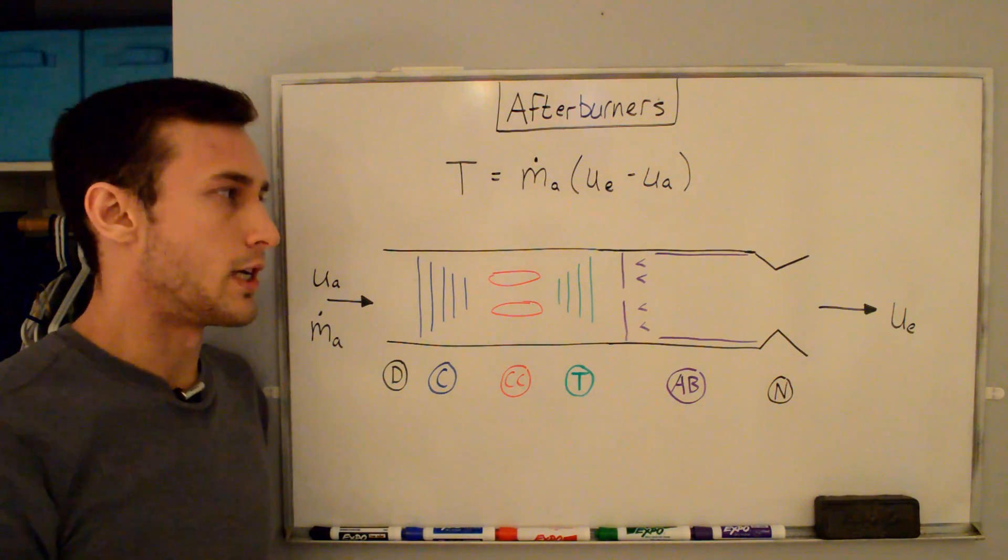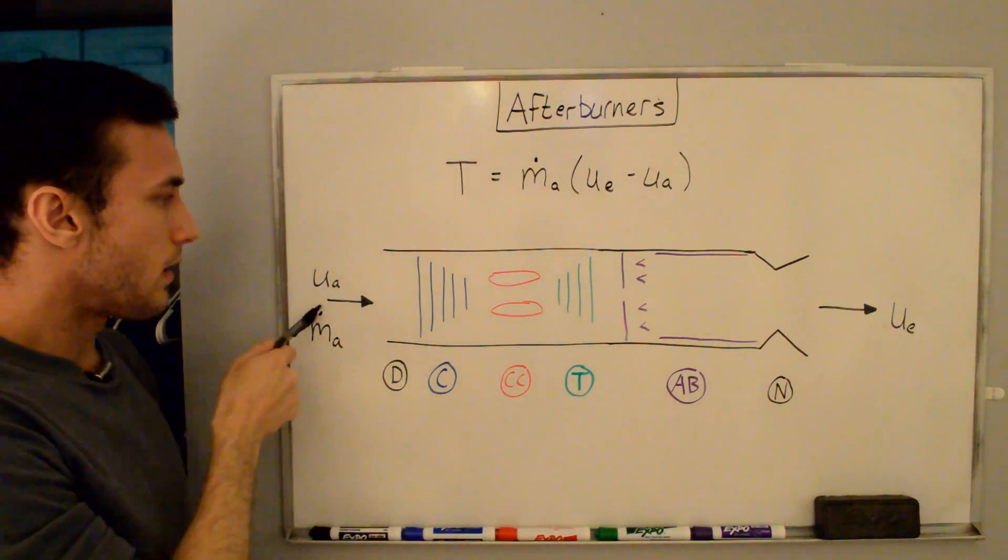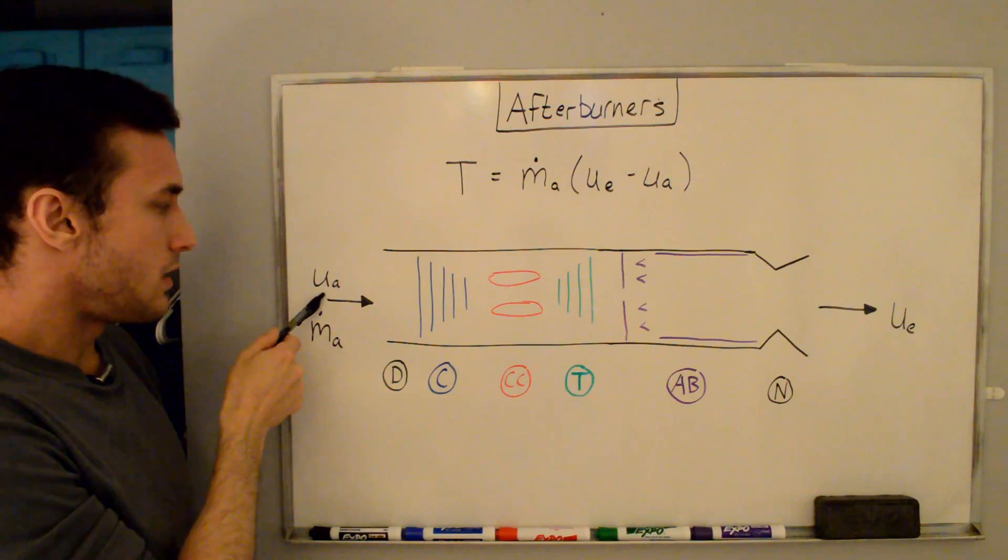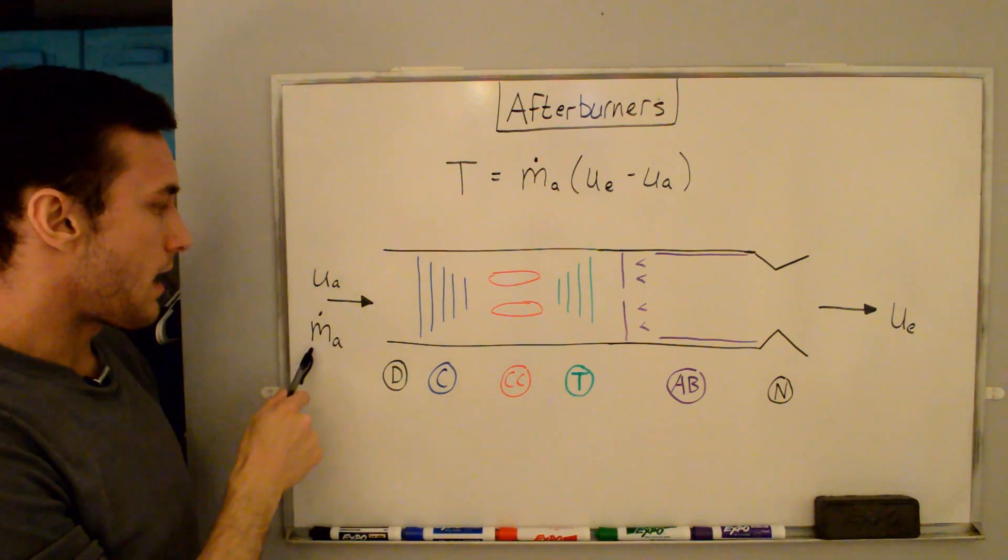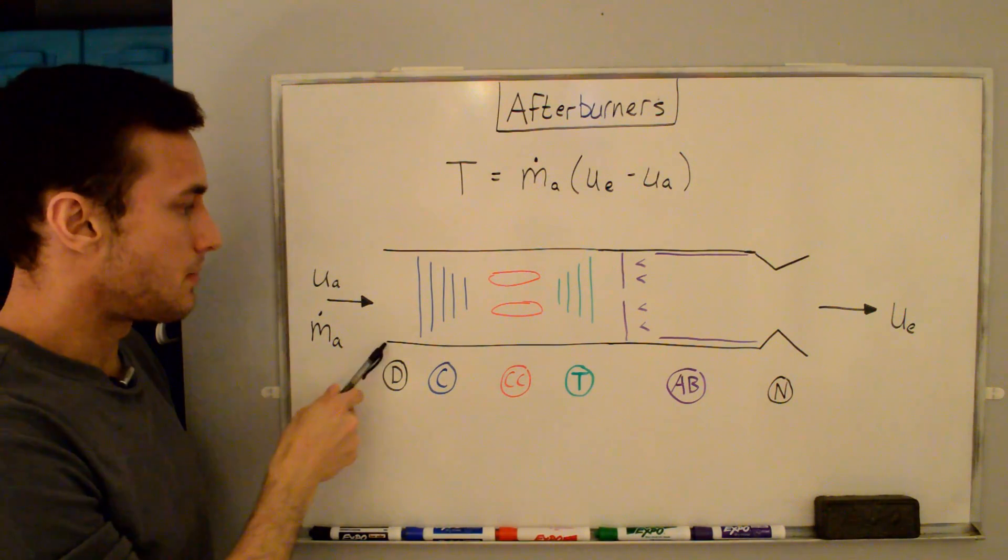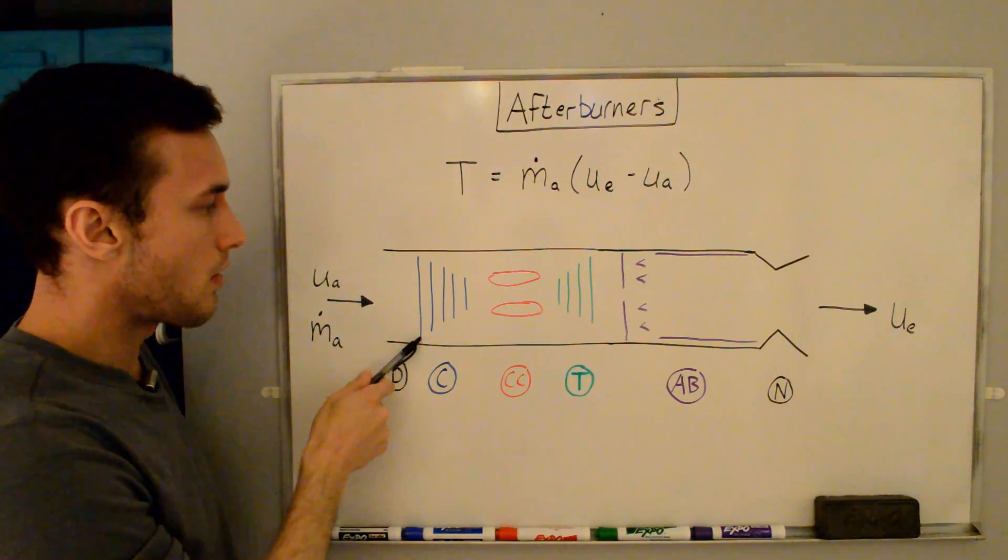So let's take a look at a turbojet engine just to start off with here. Here we have air coming into the front of the engine at a velocity UA, that's the flight speed, and at a mass flow rate of ṁₐ. It comes into the diffuser, slows down through the compressor.